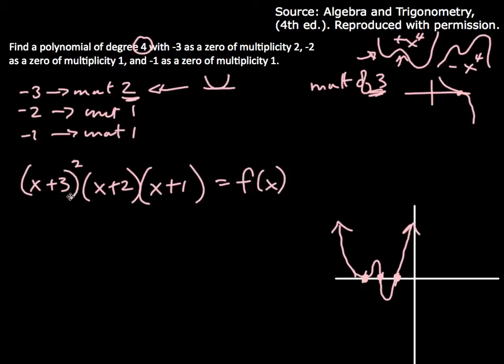In the book, what they're wanting you to do, and I won't do this on an exam, but what they want you to do is foil all that out. So really you have x plus 3 squared, so there's two of them. And then you have x plus 2, and an x plus 1.